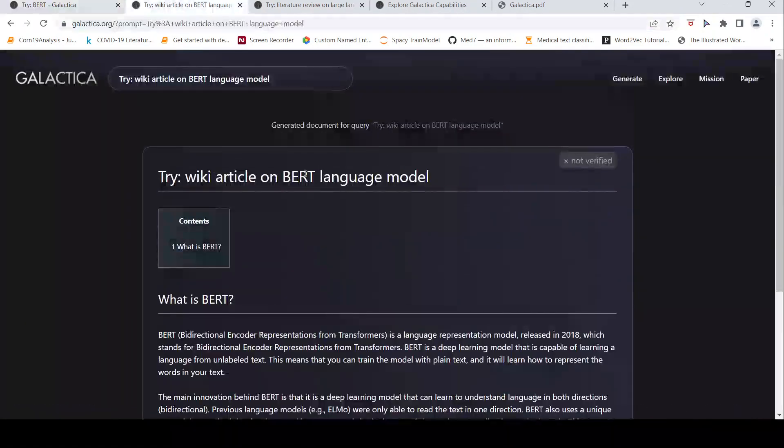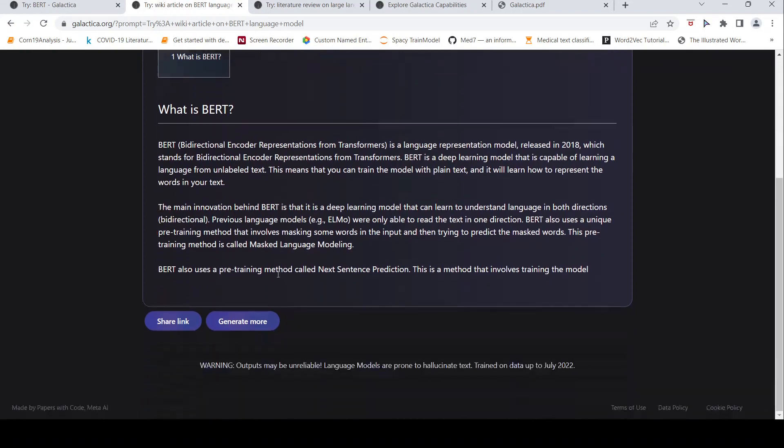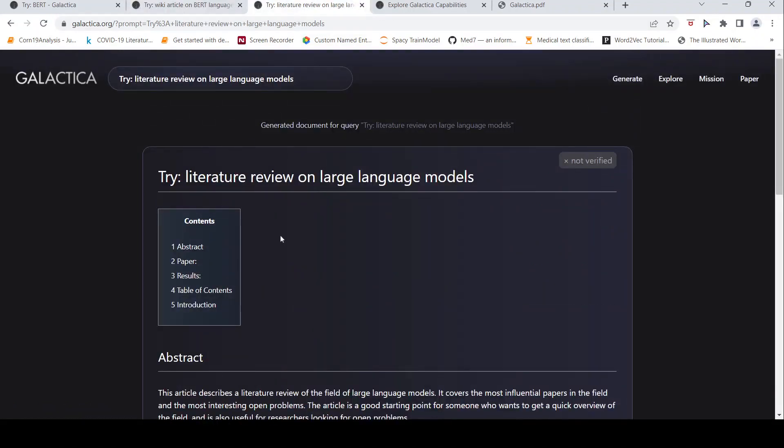But when I put wiki article on BERT language model, then it gives this nice kind of article, a small summary of the article, like the BERT is a language representation model and it is released and what is the advantage of this language model. It says outputs may be unreliable language models are prone to hallucinated text. This is the warning regarding this text which has been generated. Let's see what happens when we say generate more. It takes some time by the time we'll go into some other demo.